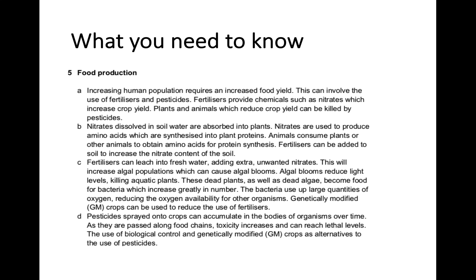That is the end of food production. The main things to remember are fertilisers and pesticides — what they do, what's good and bad about them, and what alternatives exist. Also go over algal bloom and how it works, whether you make a diagram or list out the stages, just make sure you remember those stages and how they happen.